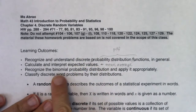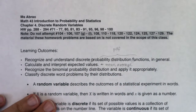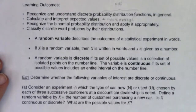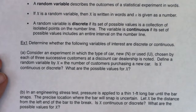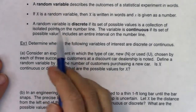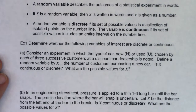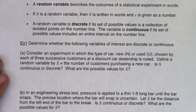We're going to get to the special case called the binomial distribution — we will recognize the binomial probability distribution and apply it appropriately. We will also classify discrete word problems by their distributions, meaning we'll read a word problem and know: is this a table? Was I given the table? Do I have to make it? Or is this a binomial? Now let's get some vocab down. A random variable describes the outcomes of a statistical experiment in words. Capital X is a random variable usually written in words, and lowercase x is given as a number.